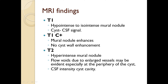On MRI, on T1, the mural nodule is hypo to iso-intense and the cystic cavity is of CSF signal intensity. On post-contrast T1-weighted images, there is enhancement of the mural nodule but no enhancement of the wall. On T2, the mural nodule shows hyper-intense signal and we can sometimes see flow voids due to the enlarged vessels at the periphery of the cyst, as we saw in our case. A CSF intensity cystic cavity is also seen.